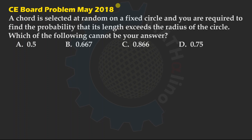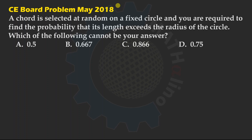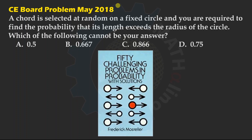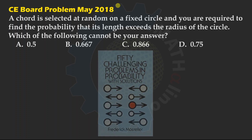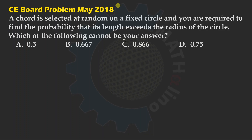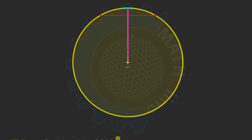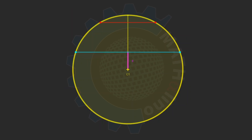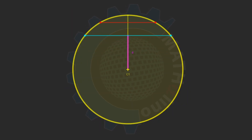I will refer you to the source of this problem: the book entitled '50 Challenging Problems in Probability with Solutions' by Frederick Mosteller. In the premise of geometry, Mosteller listed three plausible definitions of a chord of a circle. Number 1: Assume that the distance of the chord from the center of the circle is uniformly distributed over the radius of the circle.